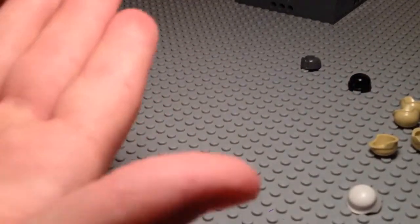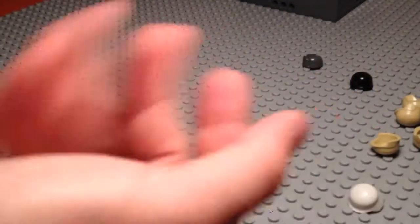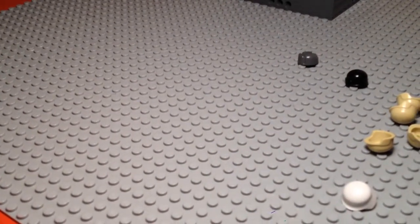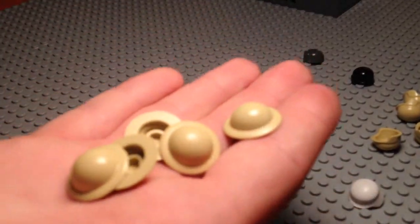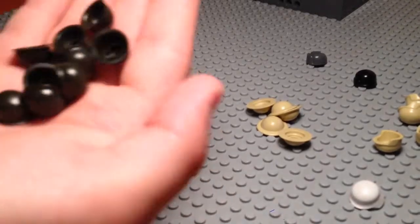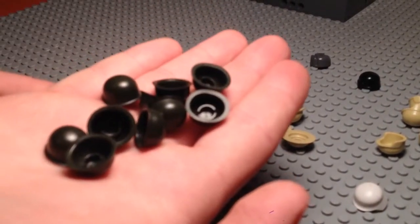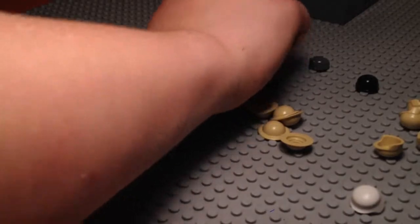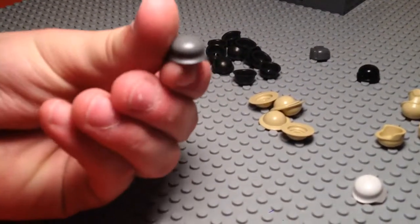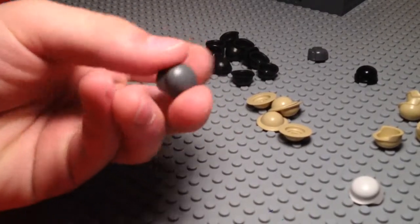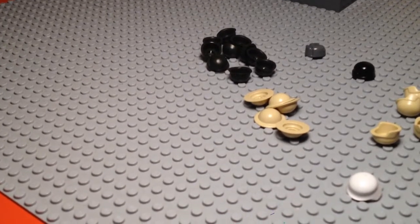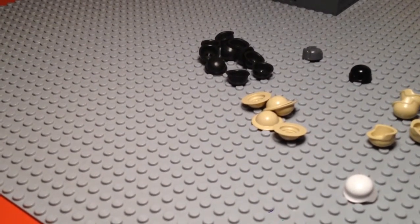One olive drab boonie hat. These are all Brick Arms, by the way. Five light tan Brody Helmets, and ten olive drab M1 steel pots, and we also have ten dark gray Stahlhelms for our Germans, which we are selling. We will get into that in the next video, and we will be replacing them with gunmetal Stahlhelms.